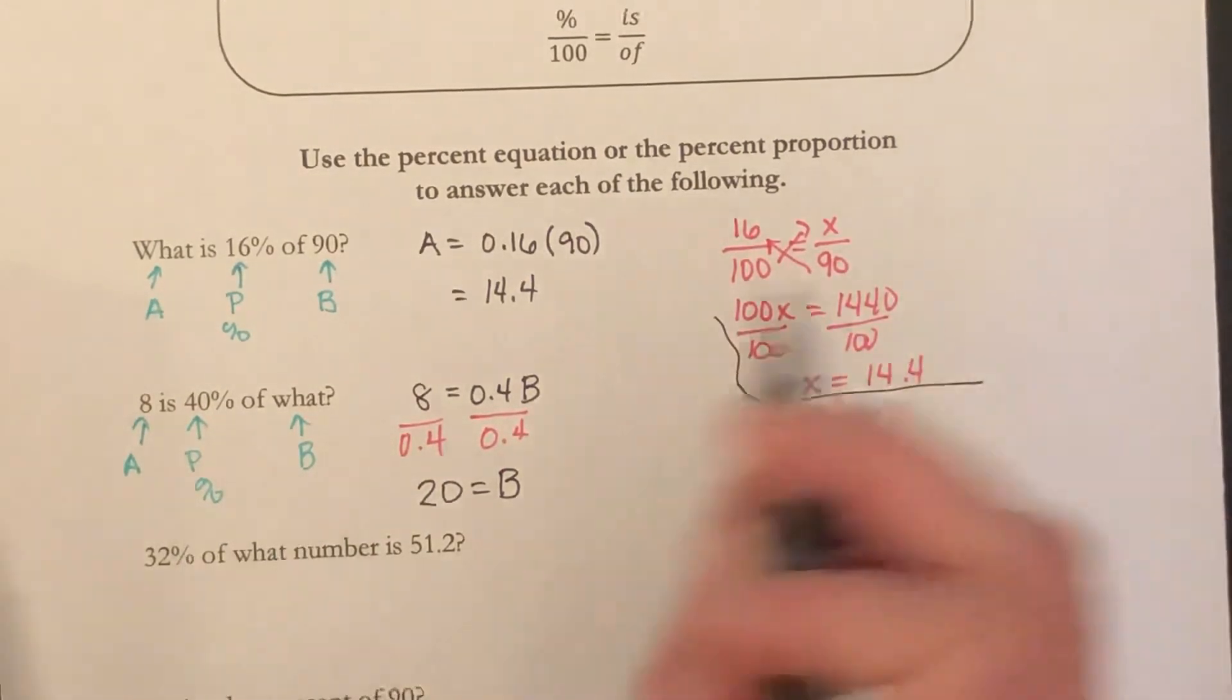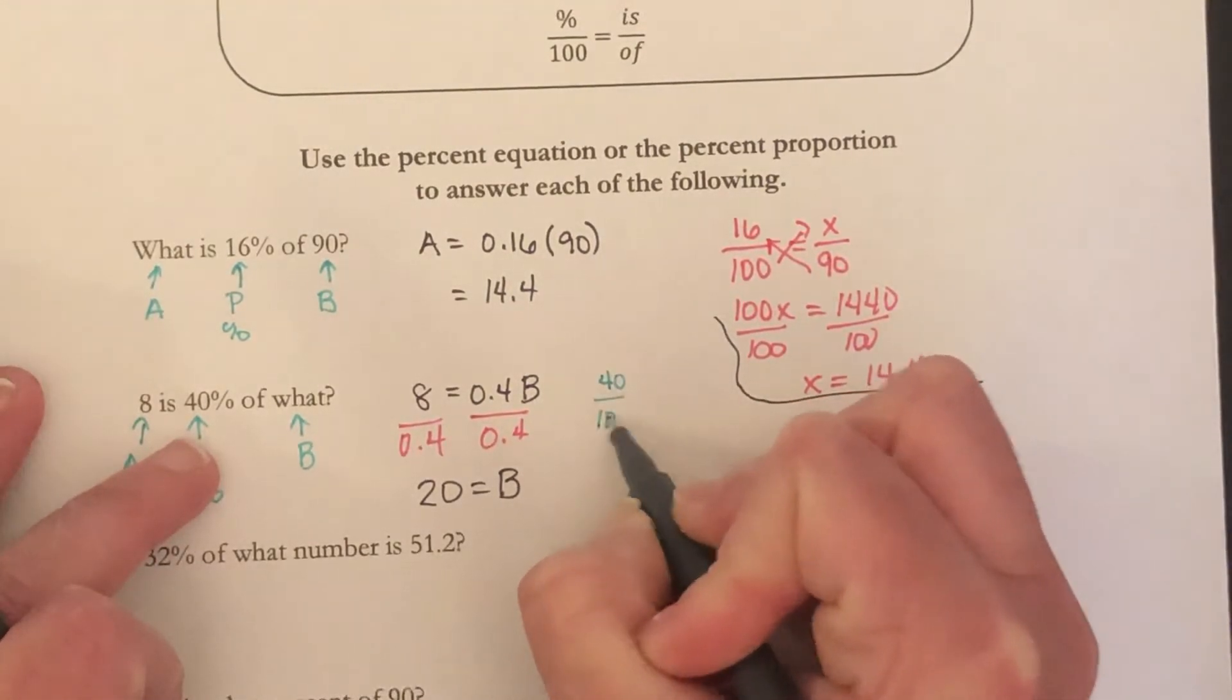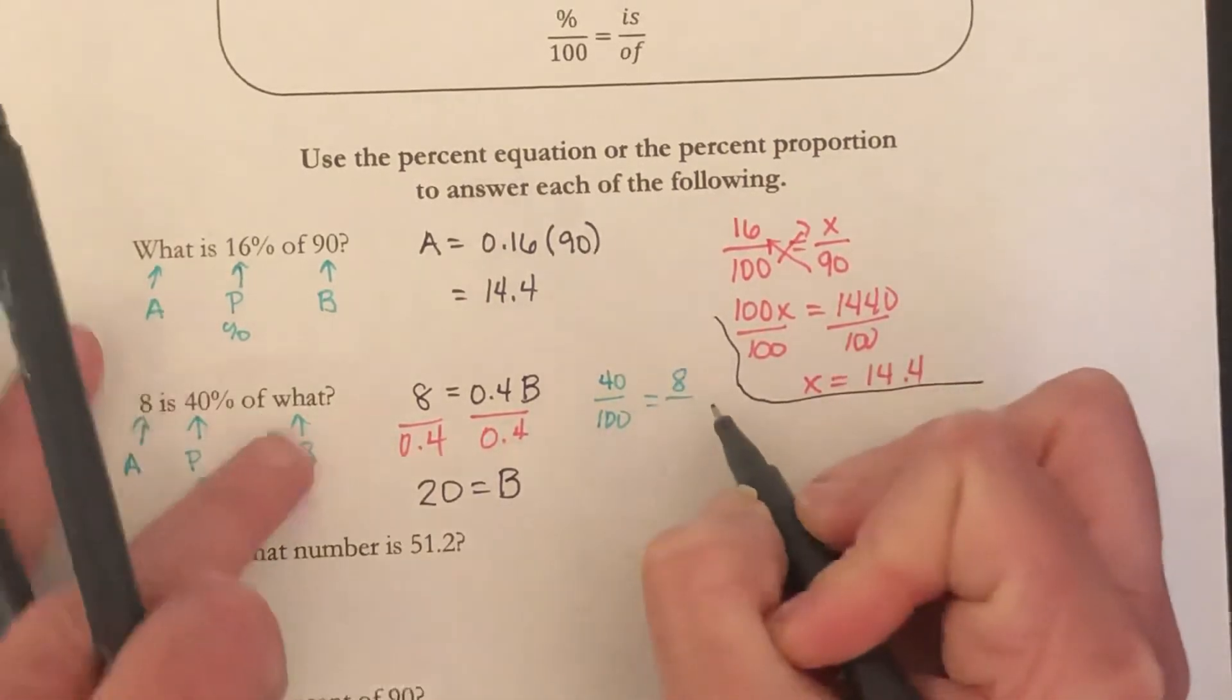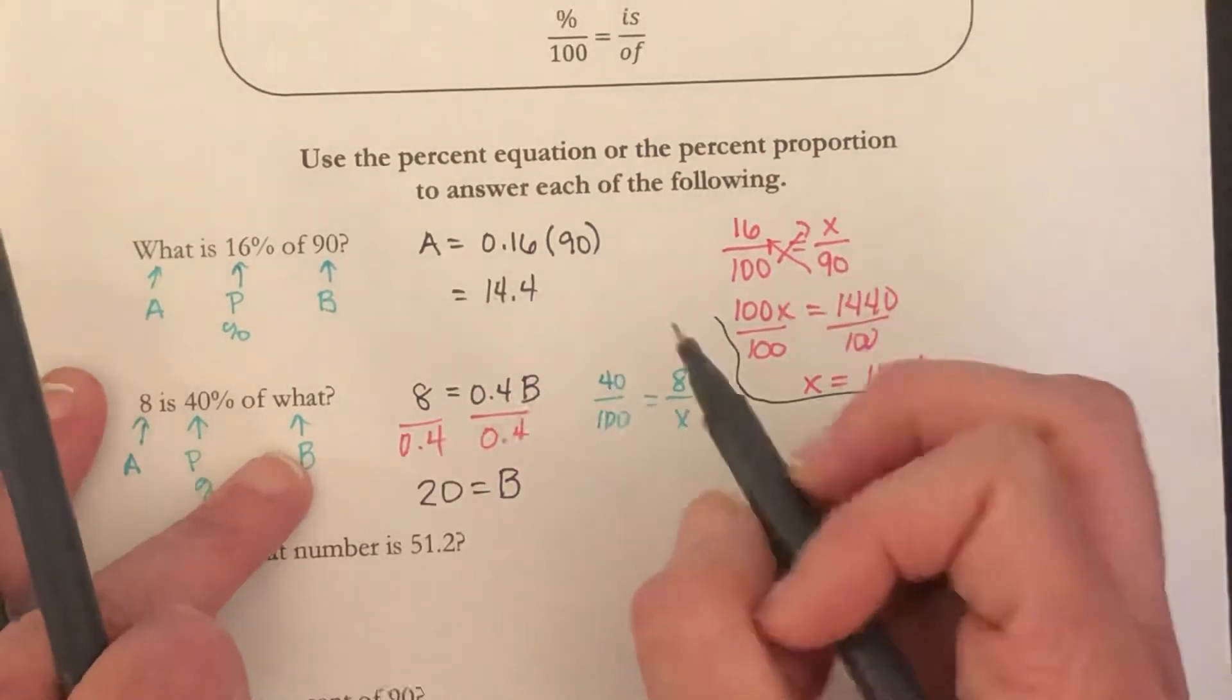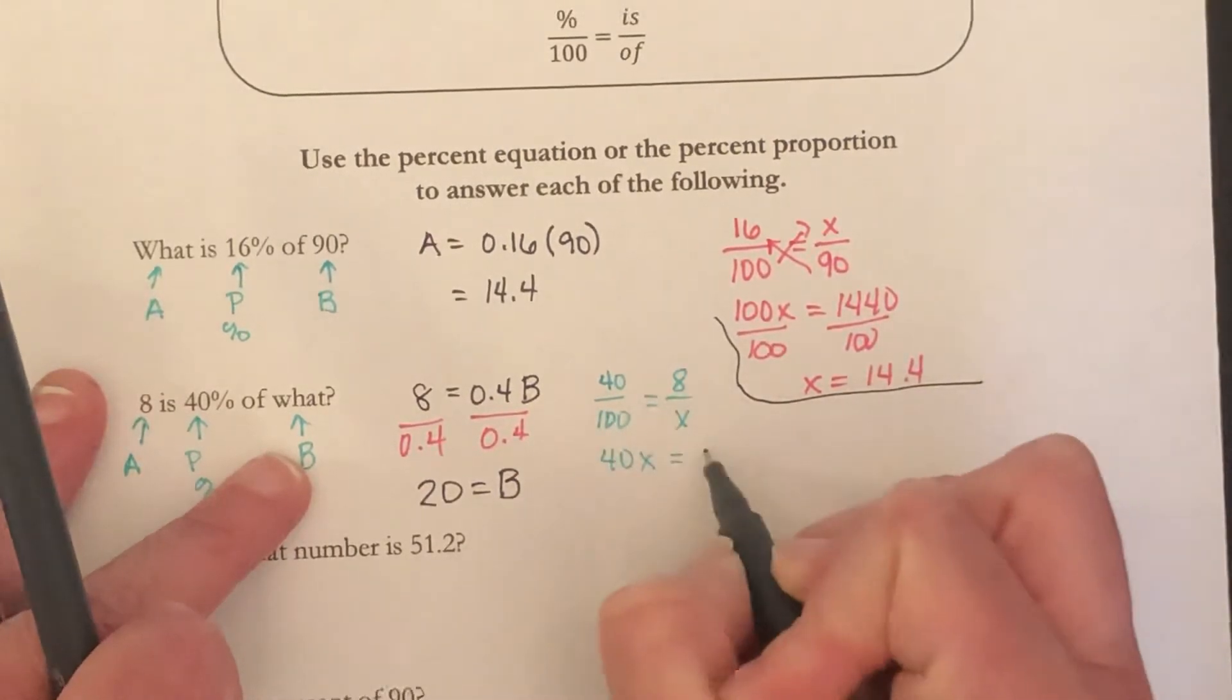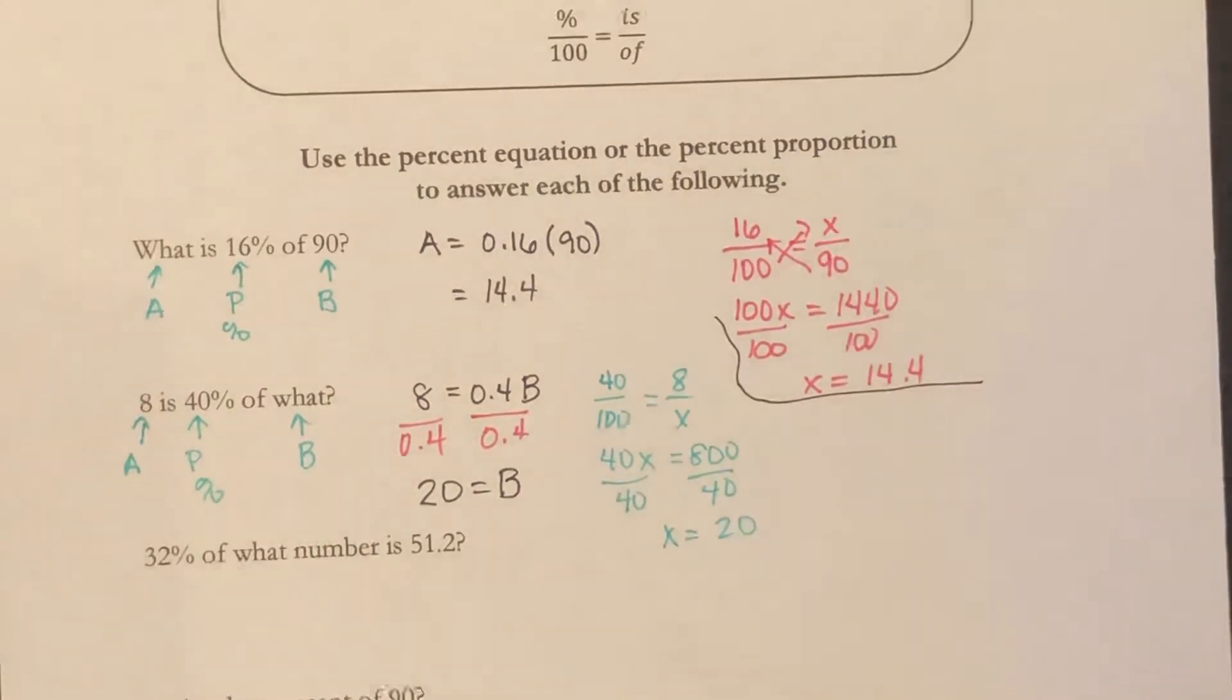If you're going to use the percent proportion instead, we have the percent over 100 equals is over of. Up here we were missing the is, now we're missing the of. We still cross multiply to get 40x equals 800. Divide both sides by 40, and we get that x is equal to 20. So we get the same answer there as well.